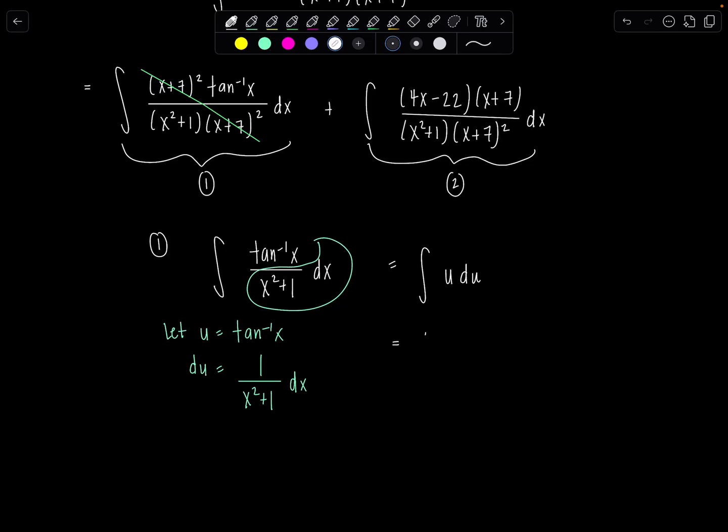So the antiderivative is going to be 1 half u squared. I'm going to put plus c1. I want to save plain old plus c for the very end, the grand finale. So this is 1 half tan inverse of x squared plus c1. So there's my first integral done. So painless, so lovely.